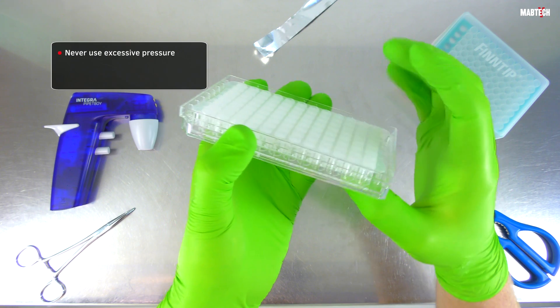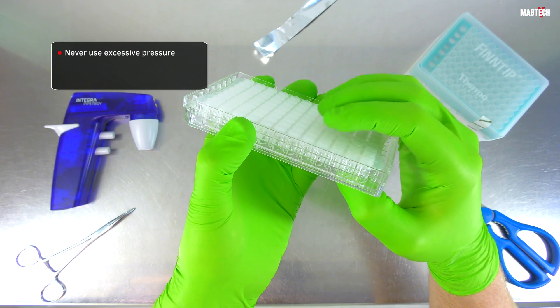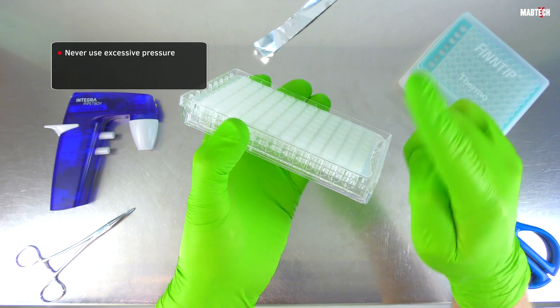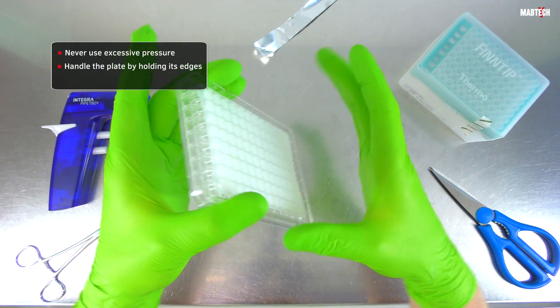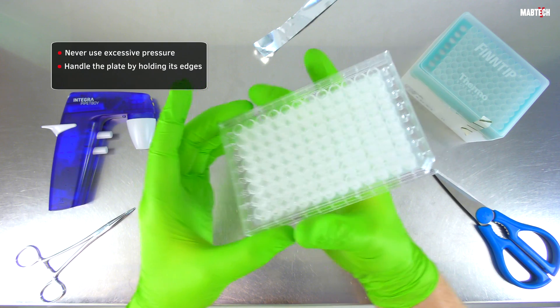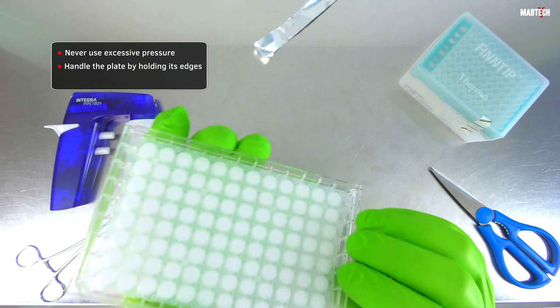First, never put excessive pressure on the backside of the underdrain with your hands. Throughout your experiment, handle the plate by holding its edges, not its underside. Do not use excessive force when gripping the plate.